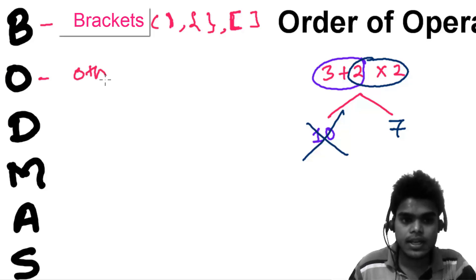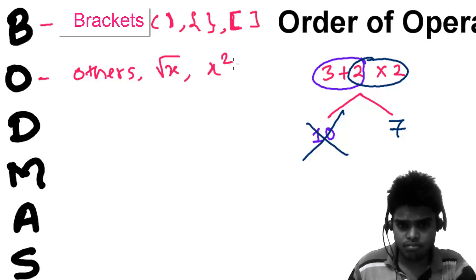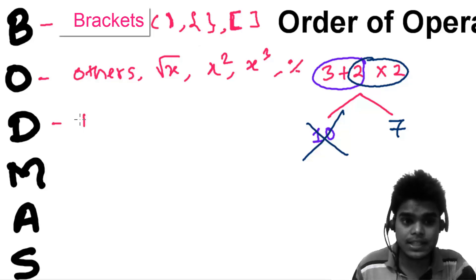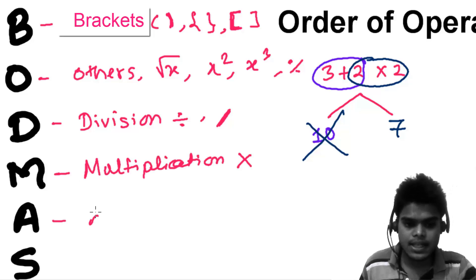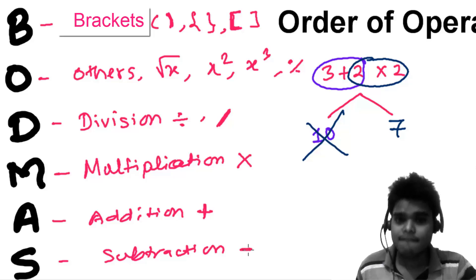Others means it can be anything like a square root, square, cube, percentage, or any kind of operations. D stands for division, then M for multiplication, then A stands for addition, and S stands for subtraction.